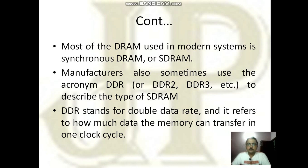Most manufacturers sometimes use the acronym DDR, which stands for double data rate. It means how much data the memory can transfer in one clock cycle. That is why whenever we go to purchase RAM, we always ask for the higher version of DDR — either DDR3 or DDR4 — because of the speed to transfer data.